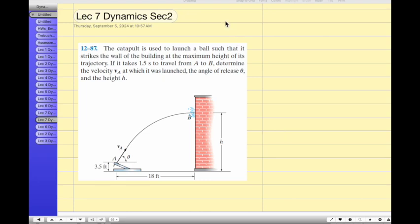The question is, the catapult is used to launch a ball such that it strikes the wall of the building at the maximum height.